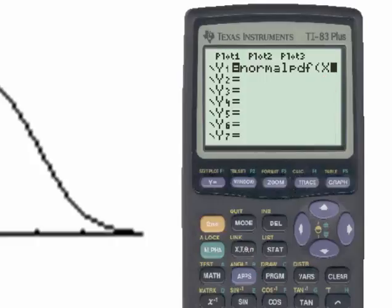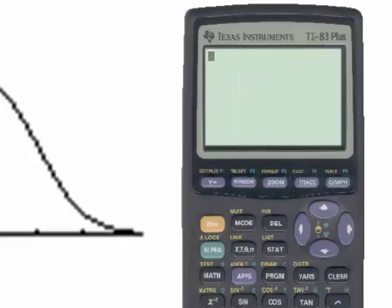And now, once again, let's return to the Home page by using the second Quit command. You can view the result of these changes by simply hitting the Graph key. It takes a minute for this to load. And here we have the normal curve drawn on our screen.